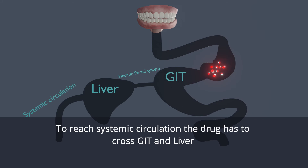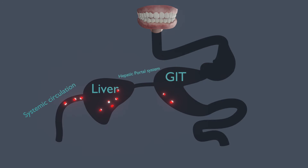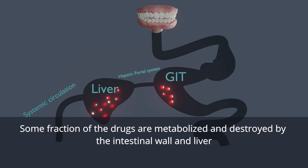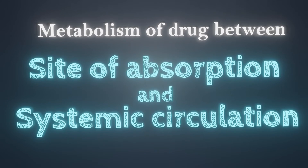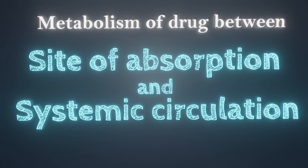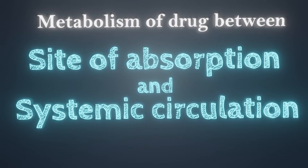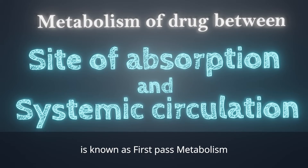For that, the drug has to cross the GIT and reach the liver through the hepatic vein, but during this passage some fraction of the drugs are metabolized and destroyed by the intestinal wall and the liver. Therefore, the metabolism of the drug between the site of absorption and the systemic circulation is known as first-pass metabolism.